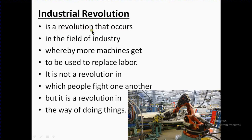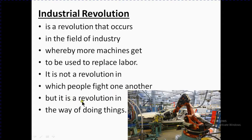The industrial revolution is a revolution that occurs in the field of industry whereby more machines came to be used to replace labor. You can see here, before — in the past — a lot of people or labor did the work, but nowadays due to the industrial revolution, machines replaced labor.